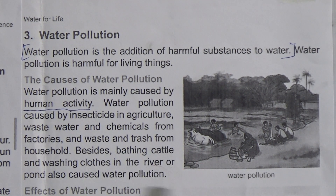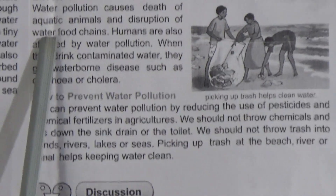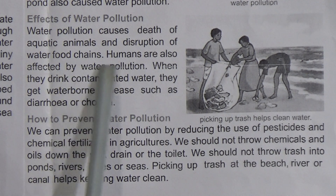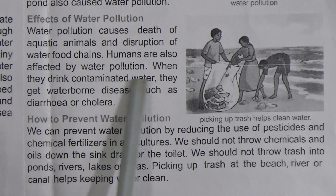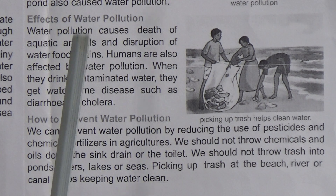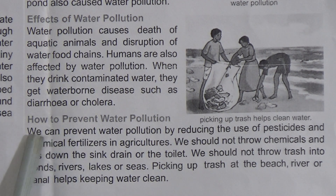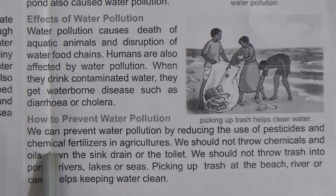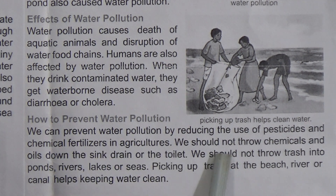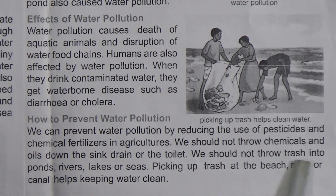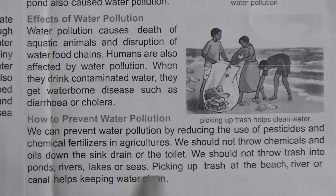What are the effects of water pollution? Water pollution causes the death of aquatic animals and disruption of water food chains. Humans are also affected by water pollution. When they drink contaminated water, they get waterborne diseases such as diarrhea and cholera. Diarrhea and cholera are waterborne diseases. How can we prevent water pollution? We can prevent water pollution by reducing the use of pesticides and chemical fertilizers in agriculture. We should not throw chemicals and oils down the sink, drain, or toilet. We should not throw trash into ponds, rivers, lakes, or seas. Picking up trash at the beach, river, or canal also helps keep water clean.